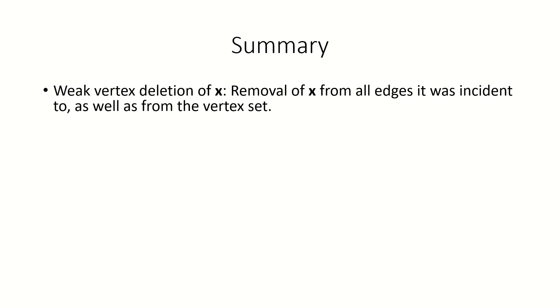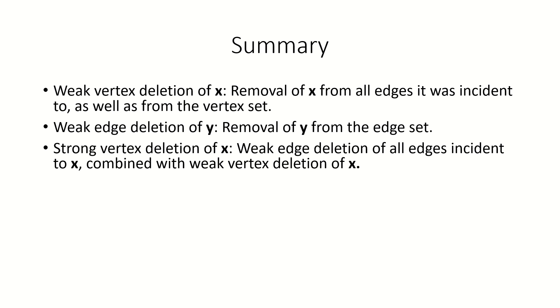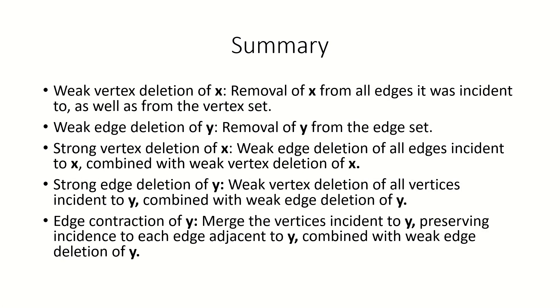To finish the video, let's do a quick recap. Weak deletion of a vertex removes that vertex from the vertex set as well as from any edges it was incident to. Weak deletion of an edge removes that edge from the edge set. Strong deletion of a vertex weakly deletes all incident edges as well as the vertex itself. Strong deletion of an edge weakly deletes all incident vertices as well as the edge itself. Finally, edge contraction merges all incident vertices into a single vertex contained by all edges adjacent to the contracted edge, combined with weak deletion of that edge. Thanks for watching — if you enjoyed this video, please subscribe.